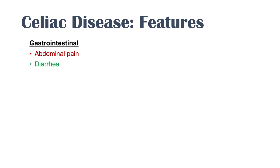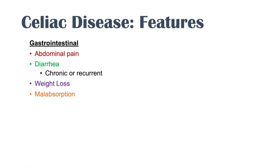Gastrointestinal symptoms are the mainstay of celiac disease due to T-cell infiltration and the inflammatory response in the intestines. We get abdominal pain, inflammation in the small intestines, and chronic or recurrent diarrhea — usually occurring after ingesting something with gluten or gliadin. Because of chronic and recurrent diarrhea, we get weight loss as well. The malabsorption from destruction of villi and microvilli also contributes to weight loss.